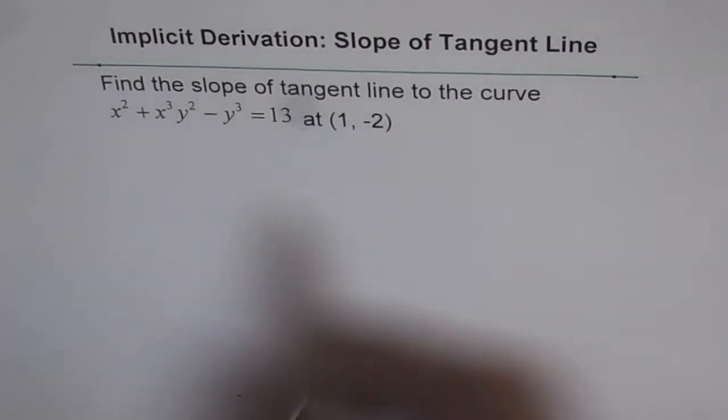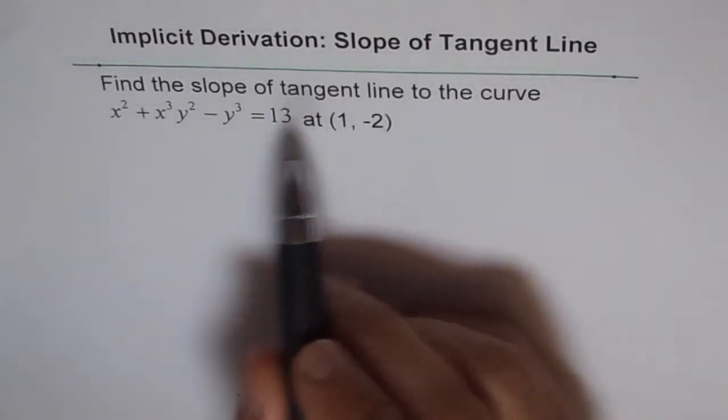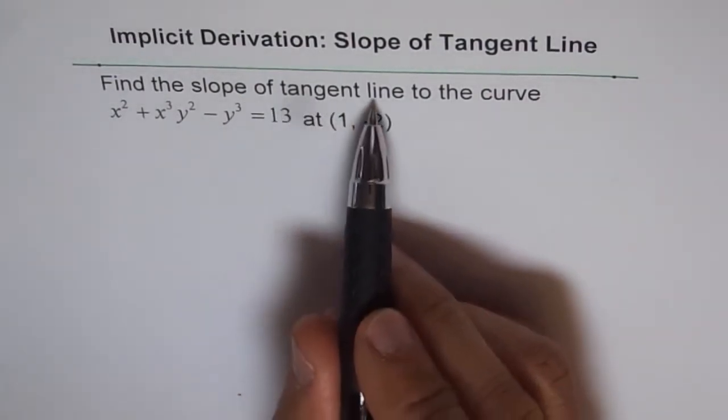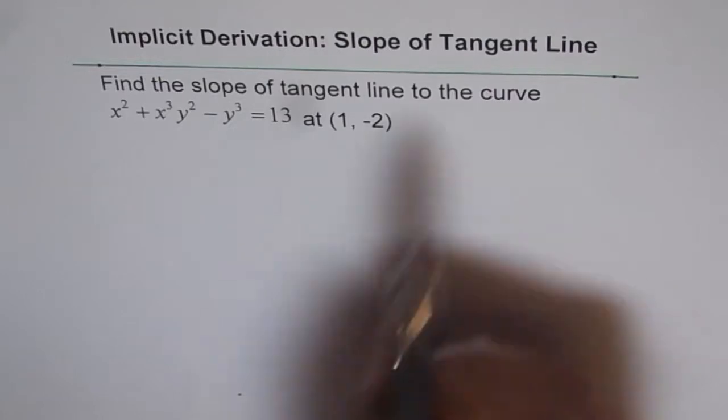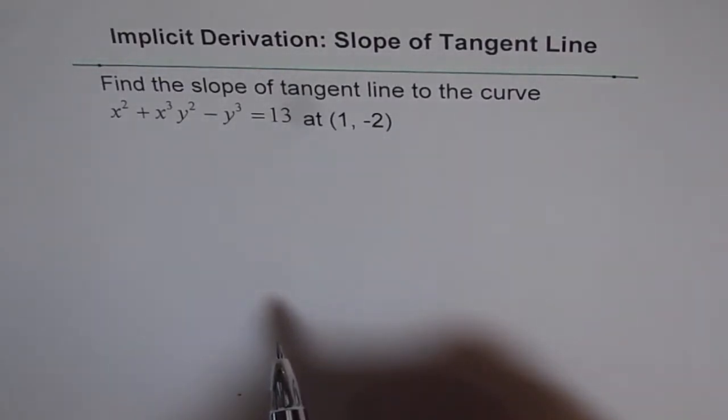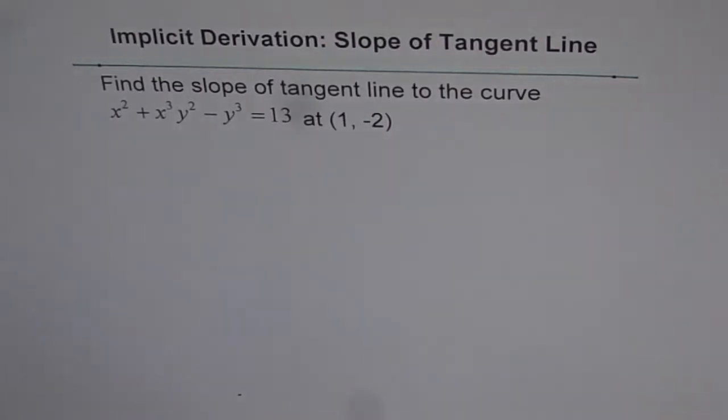This point is on the curve and we need to find the slope of tangent line at this point on the curve. In examples we did initially, we were finding a general expression to find dy/dx, that is, to find the slope of tangent line at any point on the curve.